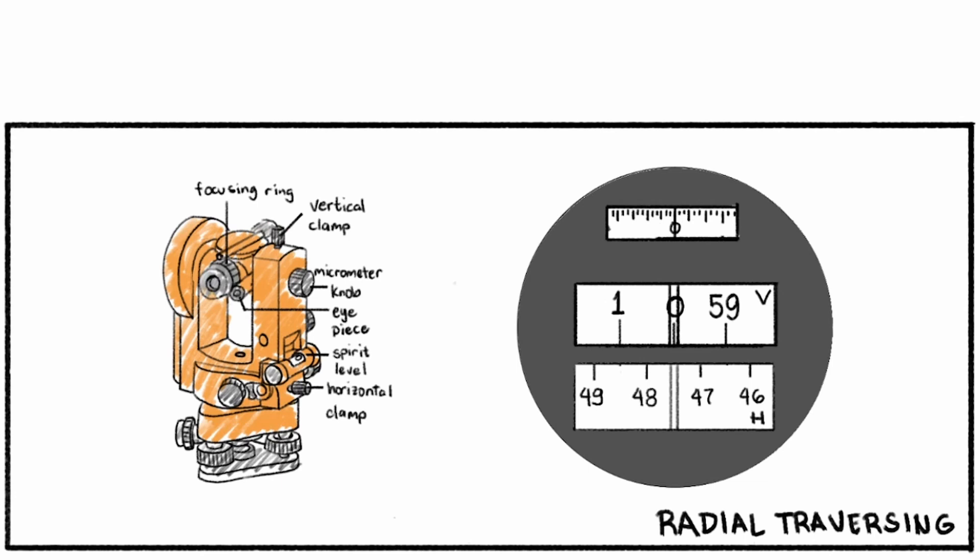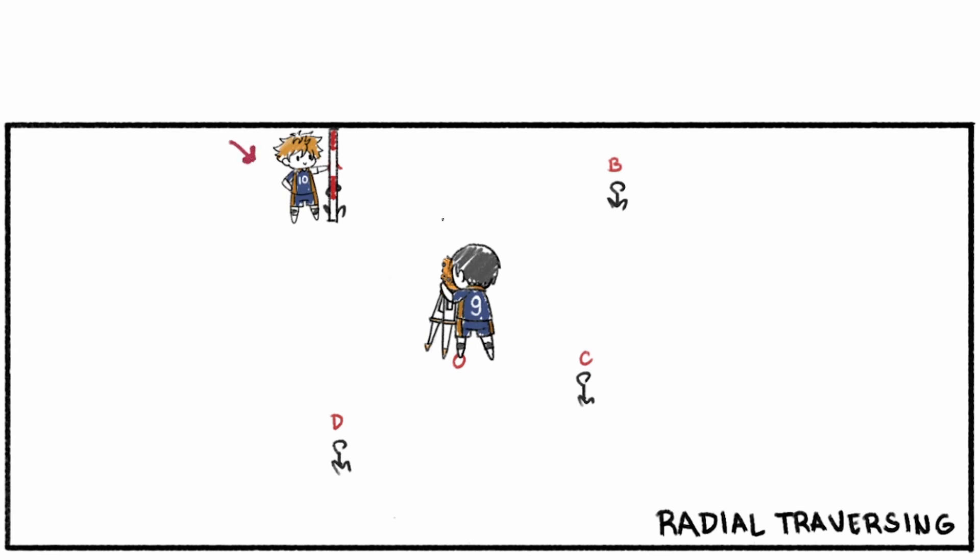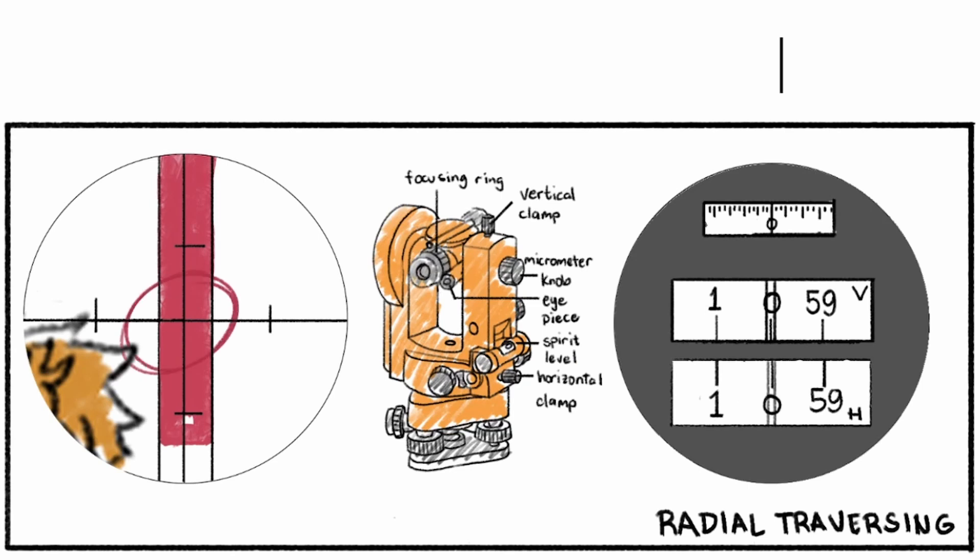Next, have the rod man hold the range pole at the first corner of the field which is point A. Rotate the theodolite horizontally inside this range pole. After making sure the range pole is vertical and the crosshair intersects the range pole, set the horizontal micrometer scale to zero reading.